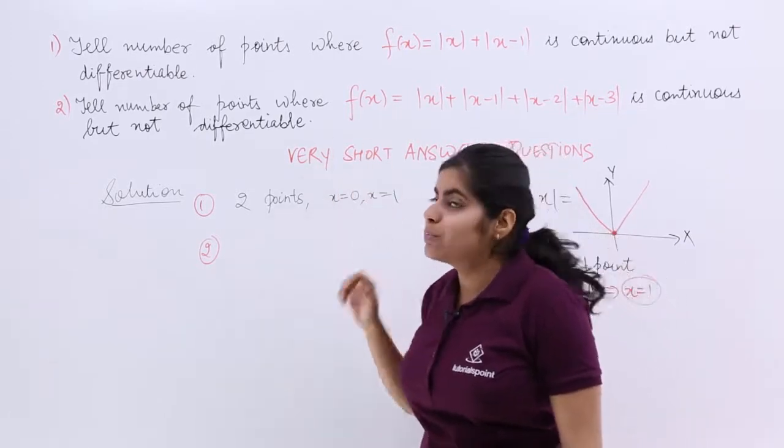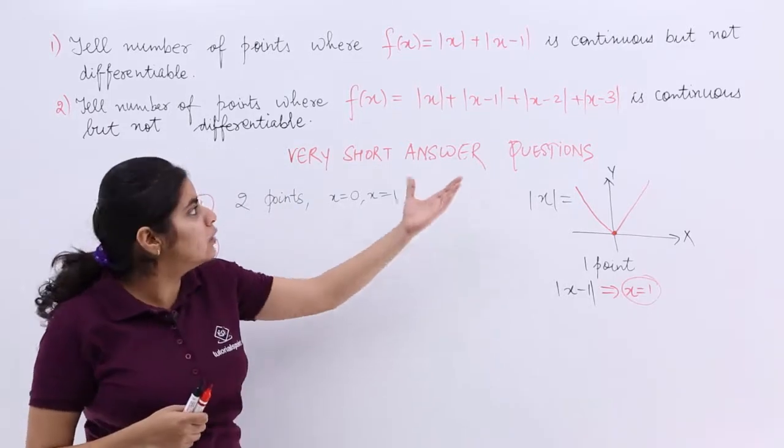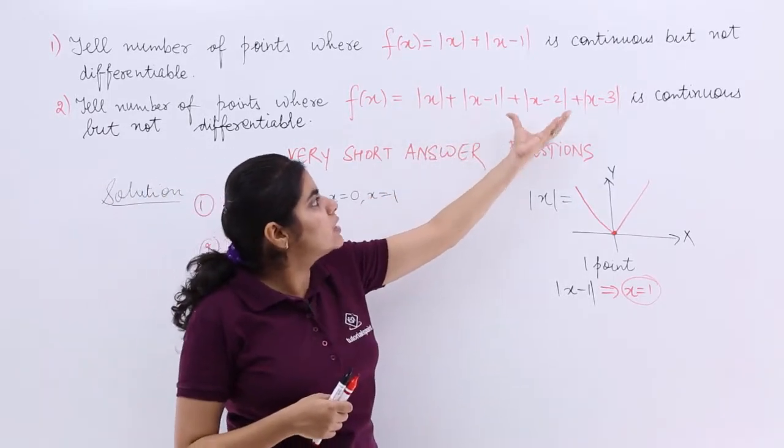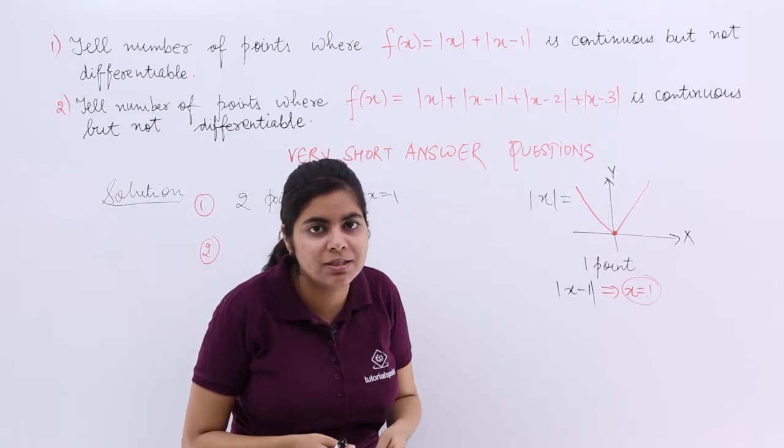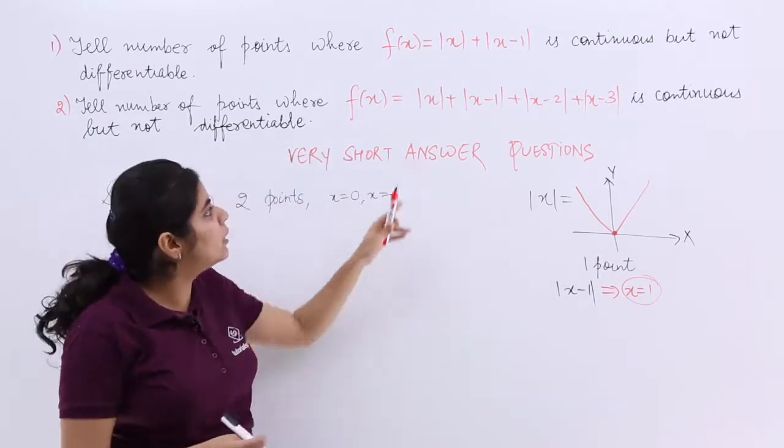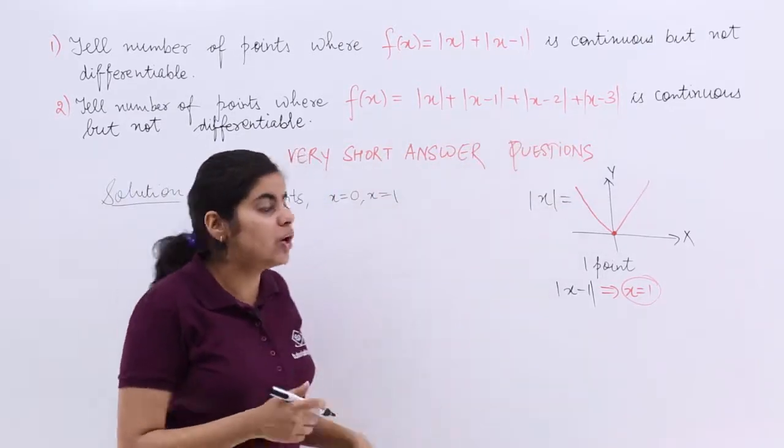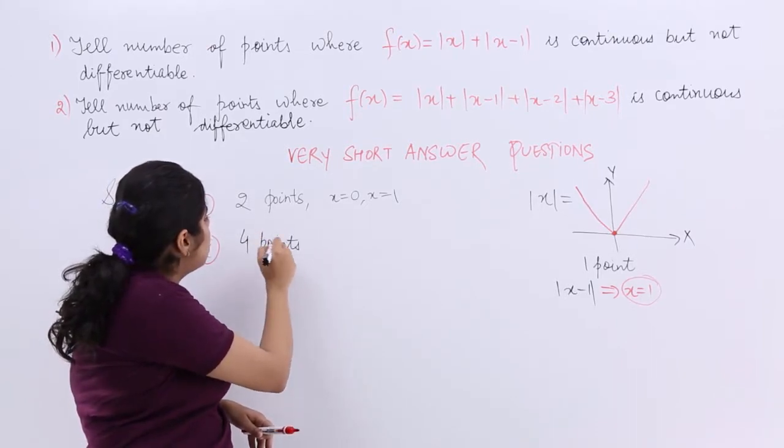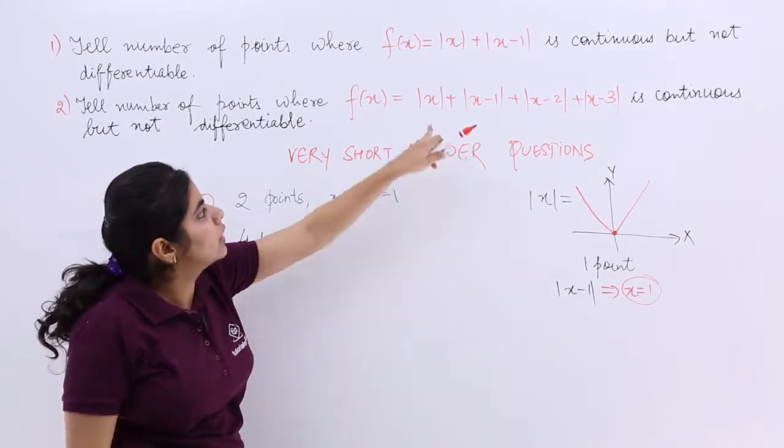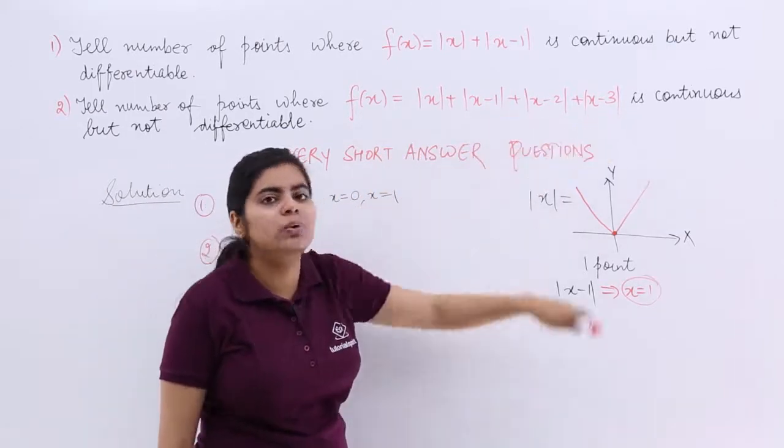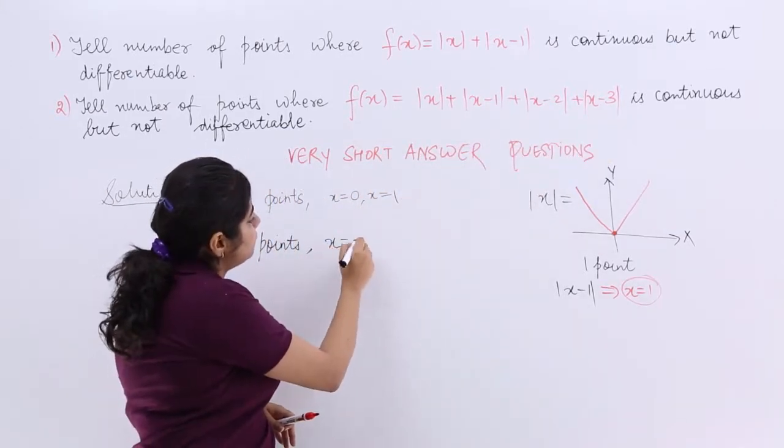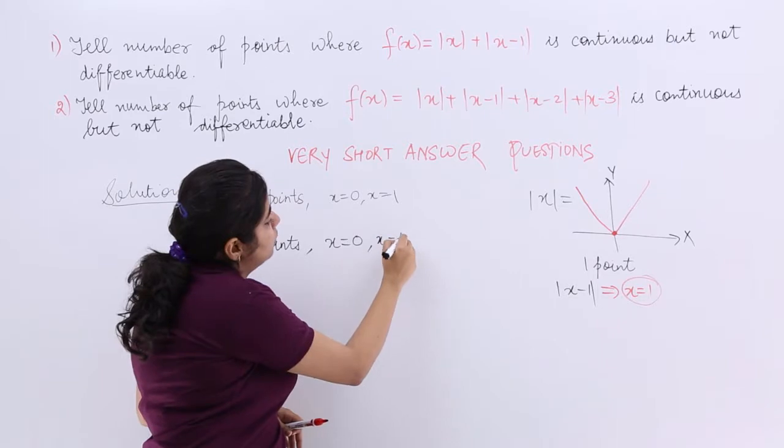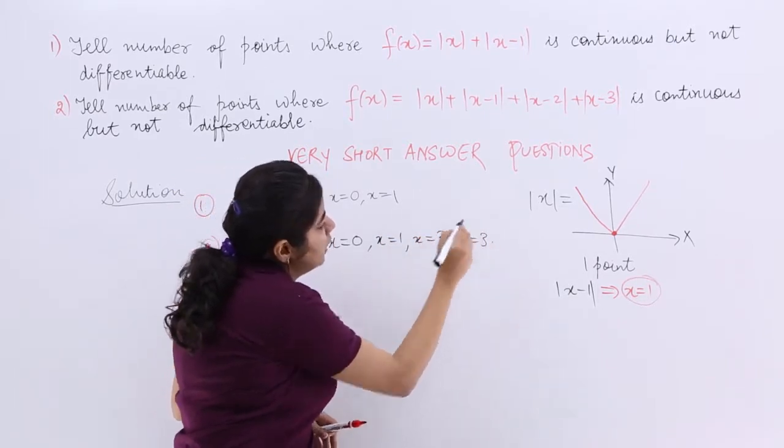Similarly, next problem is regarding f(x), which is a longer lengthier function: mod x, x minus 1, x minus 2, x minus 3. Easy? Again, how many points? 1, 2, 3, 4. So how many points are there? There are four points into consideration and those four points are what? x is equal to zero, 1, 2, and 3. So it is 0, x is equal to 1, x is equal to 2, x is equal to 3.